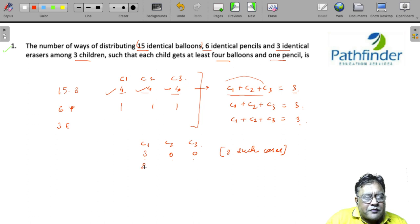Another way of distributing is one of them gets 2, one gets 1, and another gets 0. This distribution can happen in 6 ways. And similarly, there can be a third type of distribution in which each child gets 1 each. This can happen in 1 way.